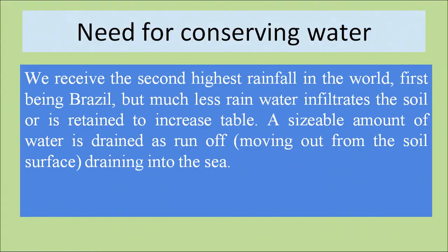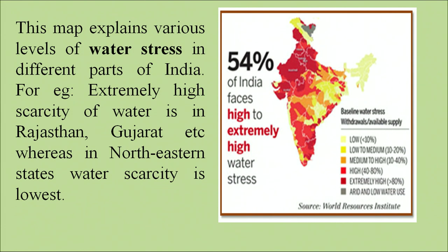Need for conserving water: India receives the second highest rainfall in the world, the first being Brazil, but much less water infiltrates the soil or is re-entered into our water table. A sizeable amount of water is drained as runoff — that is, moving out from the soil surface and draining into the sea. The map on screen shows water stress in different parts of our country. The red parts are under high stress, having much less water than required. Yellow and orange indicate comparatively less stress, seen in our northeastern areas. High stress zones include states like Gujarat and Rajasthan.